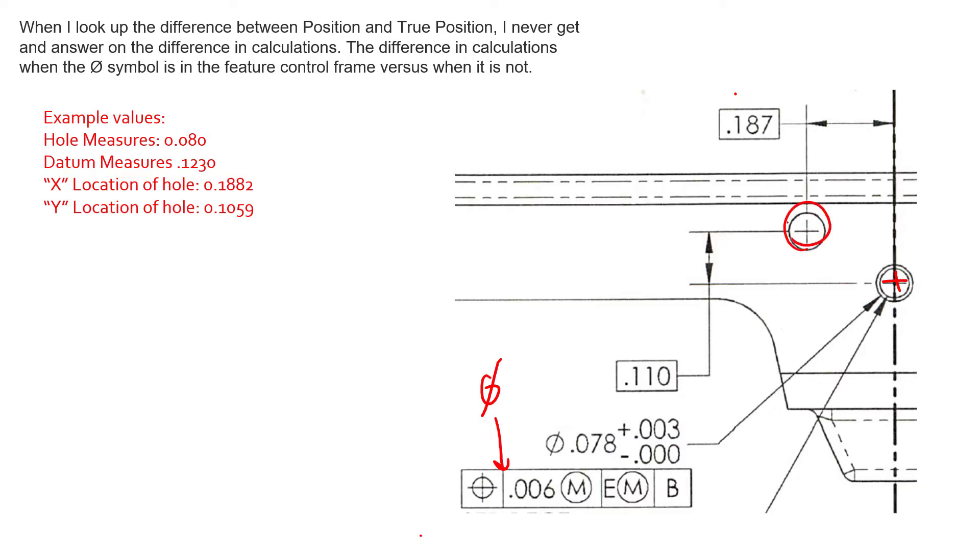Datum feature E is this hole right here. So we have a feature of size as a datum feature, which just then gives us an axis as the datum. And an axis as a primary datum can control two translations and two rotations. And then we introduce datum B, which is the surface up here, locking in the remaining degrees of freedom if necessary.